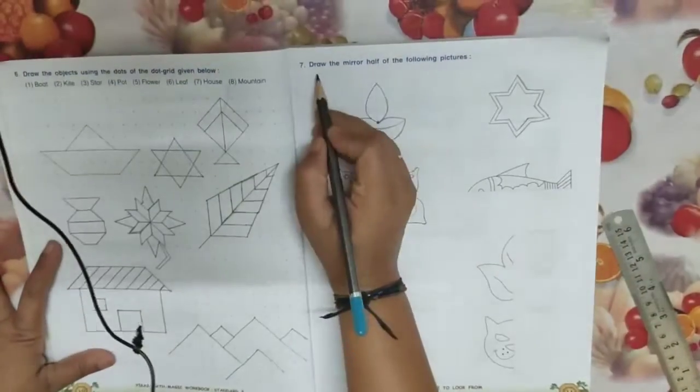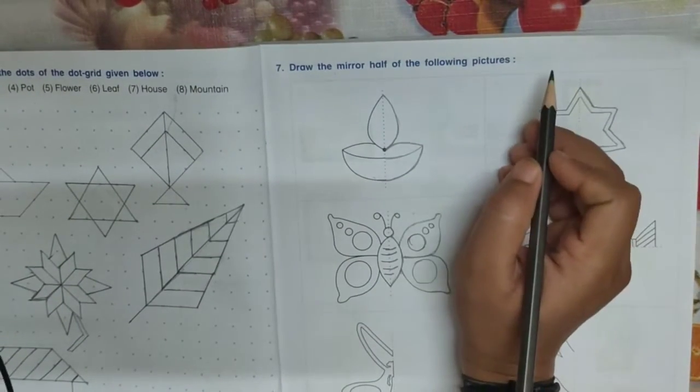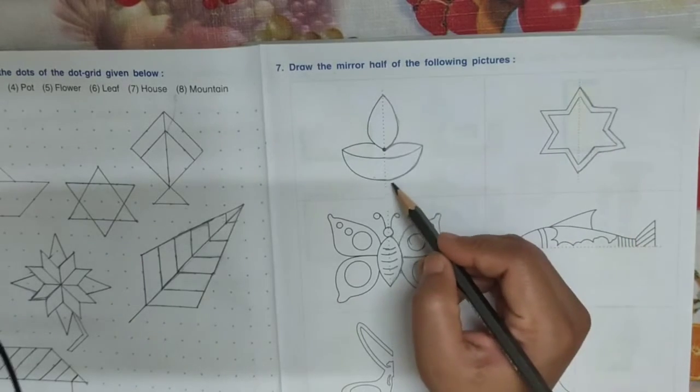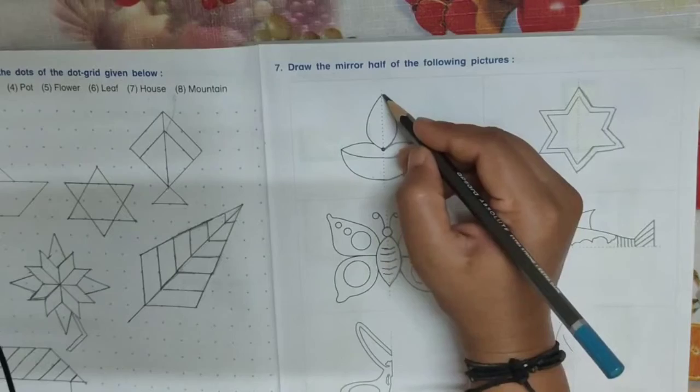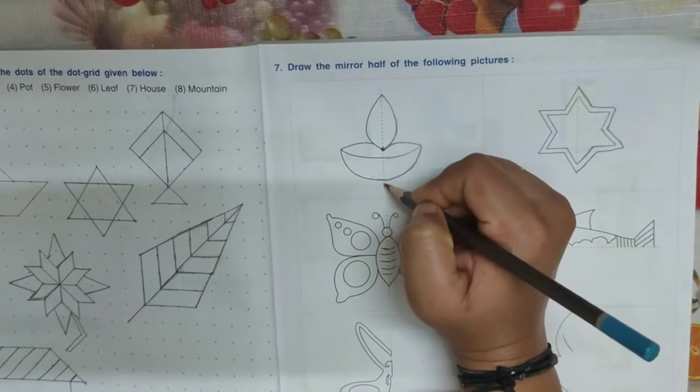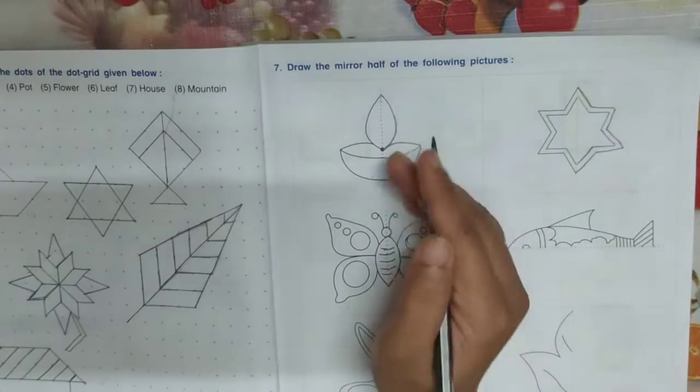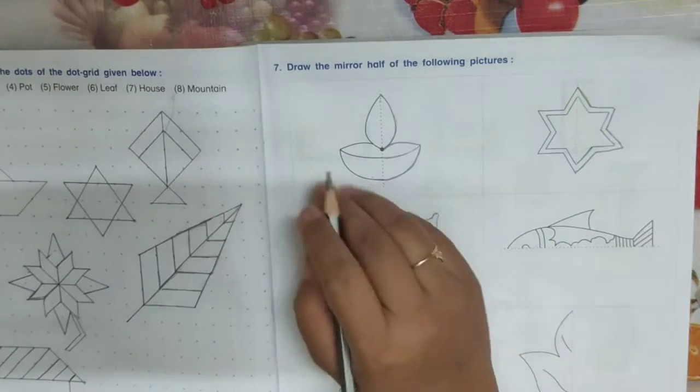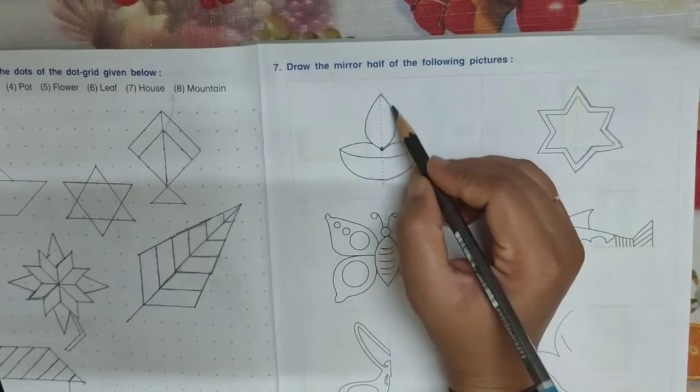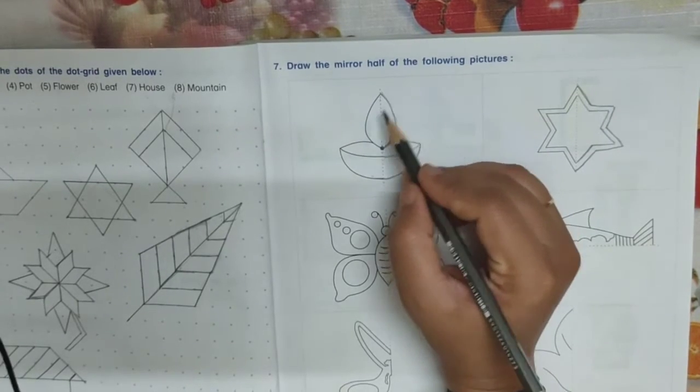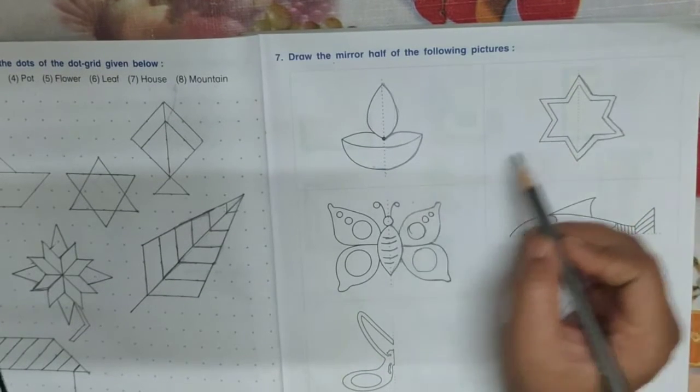Draw the mirror half of the following pictures. See children, in your book, half part is given and one dotted line is given in the middle. In the next part, you have to draw the next half part and complete the picture.